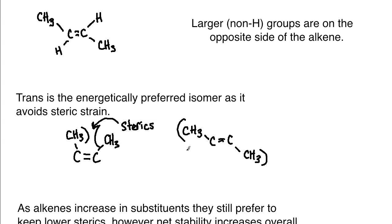You might still get some interaction between the methyl groups and the hydrogens, but that's far preferable compared to having larger groups clashing. Methyl is just one example — we can certainly get bulkier groups like t-butyl or ethyl that create even larger steric problems. The main point is that of the two stereoisomers, the trans form is the preferred and more stable form for alkenes.